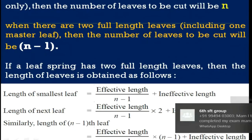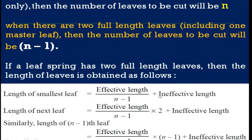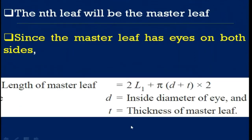To summarize: when there is only one full-length leaf, the number of leaves is n; if there are two full-length leaves, calculations are done for n minus 1 leaves. The length of the smallest leaf equals effective length divided by (n minus 1) plus the ineffective length, and successive leaves are found by multiplying with 1, 2, 3, up to n minus 1. For the master leaf, the circumference of the eye ends must be added.